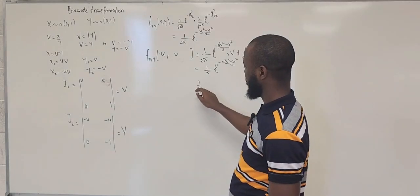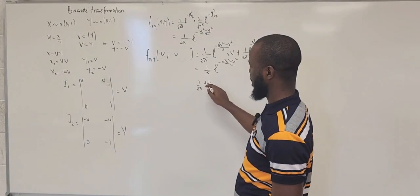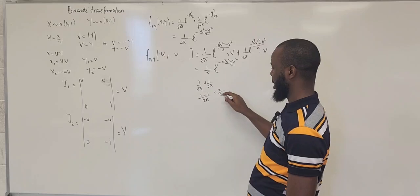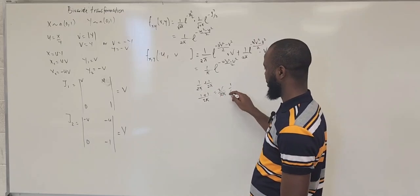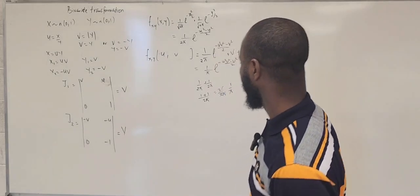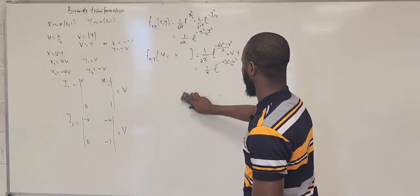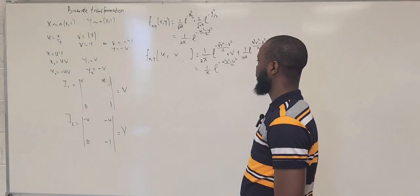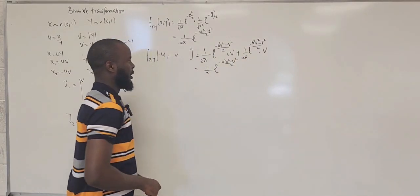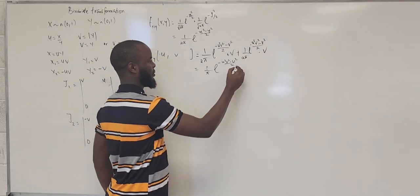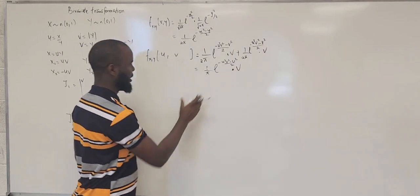If you have one over two pi plus one over two pi, you have two over two pi, which gives one over pi. So the result is one over pi, exponential minus u squared v squared minus v squared over two, multiplied by v. This is the joint distribution.